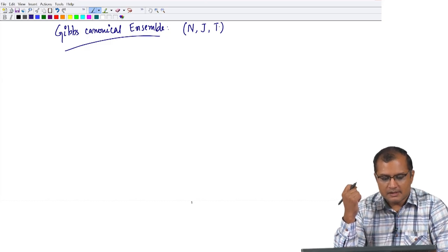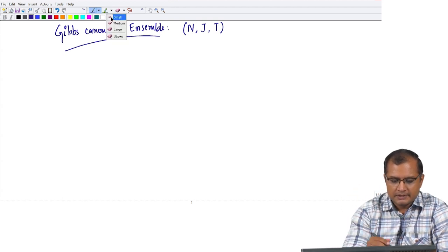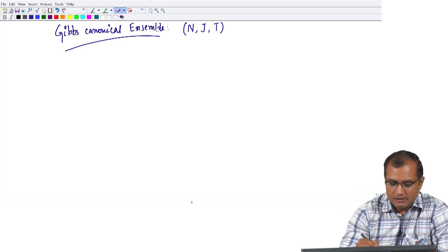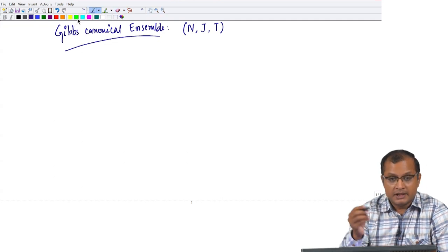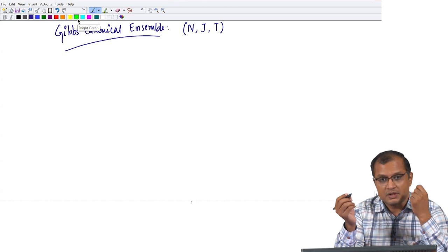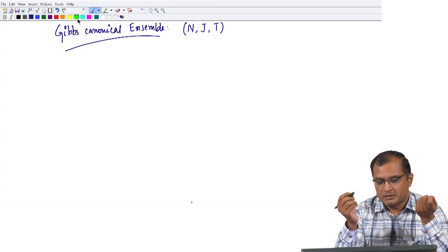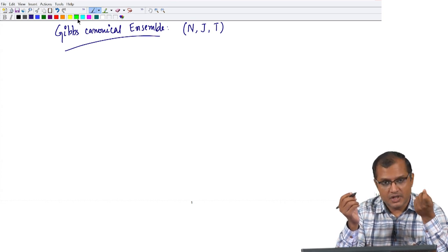Good morning students. Today we will start and discuss the Gibbs canonical ensemble. The three variables that I have chosen to keep constant are the number of particles in the system, the generalized force J, and the temperature T.